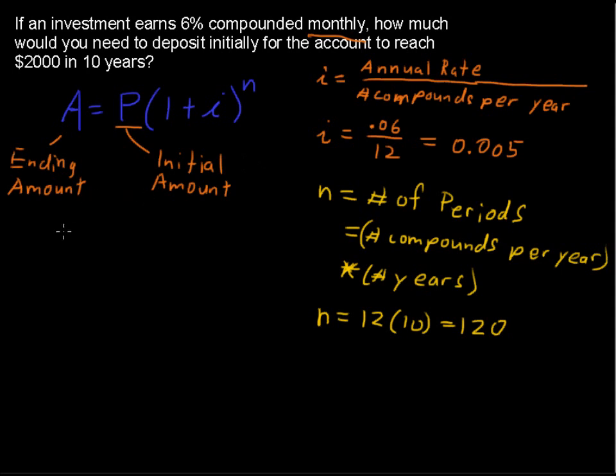Now let's plug in what we know. We know that A, the ending amount, is $2,000. So $2,000 equals the initial amount, which is what we don't know, times 1 plus .005, all raised to the 120th power.